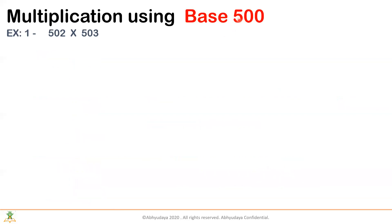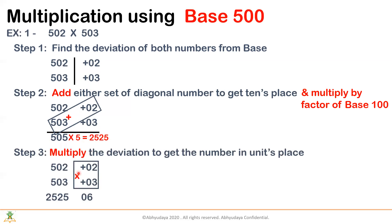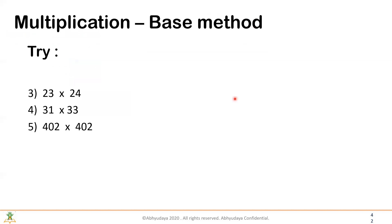Let's take a base of 500. We will have to multiply the first part of the number by 5, because 500 is 5 times 100. The deviation from these numbers: 502 minus 500 is 02, 503 minus 500 is 03. Diagonally, 503 plus 2 is 505. Now multiply this number by 5. 505 times 5 is 2525. That's the first part of the answer. Now multiply 2 into 3, which is 6. 252506. That's the final answer. Thank you.